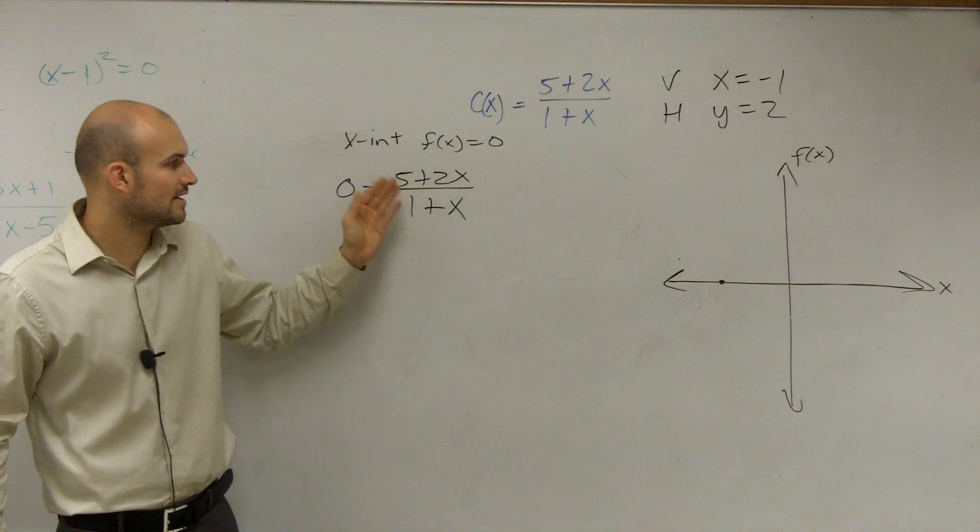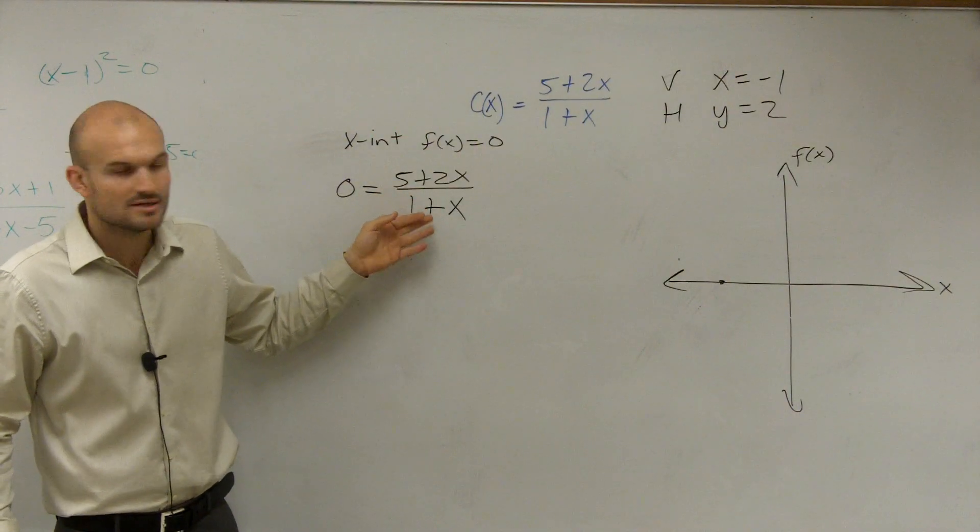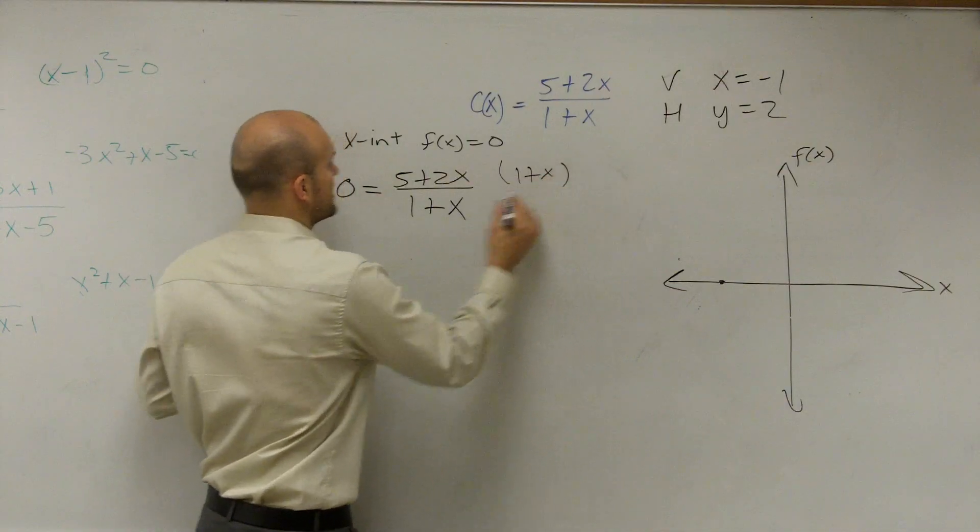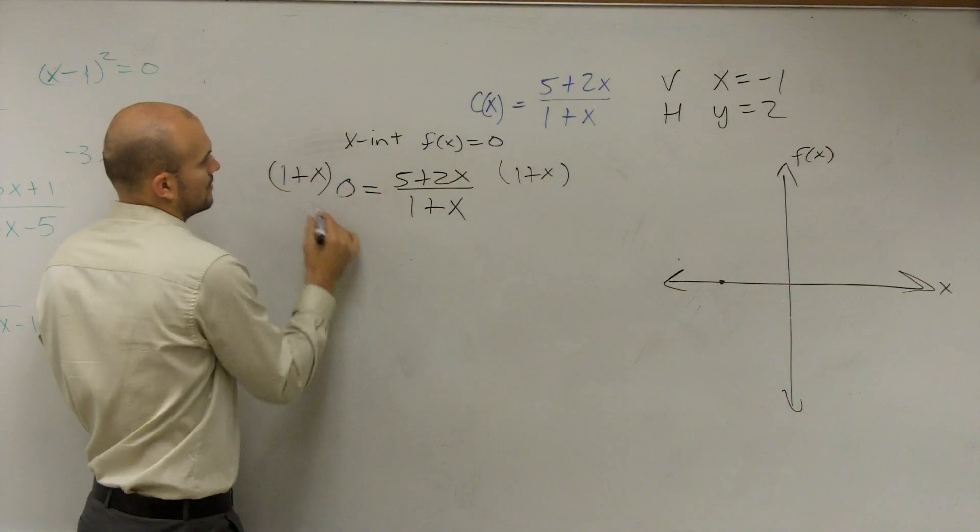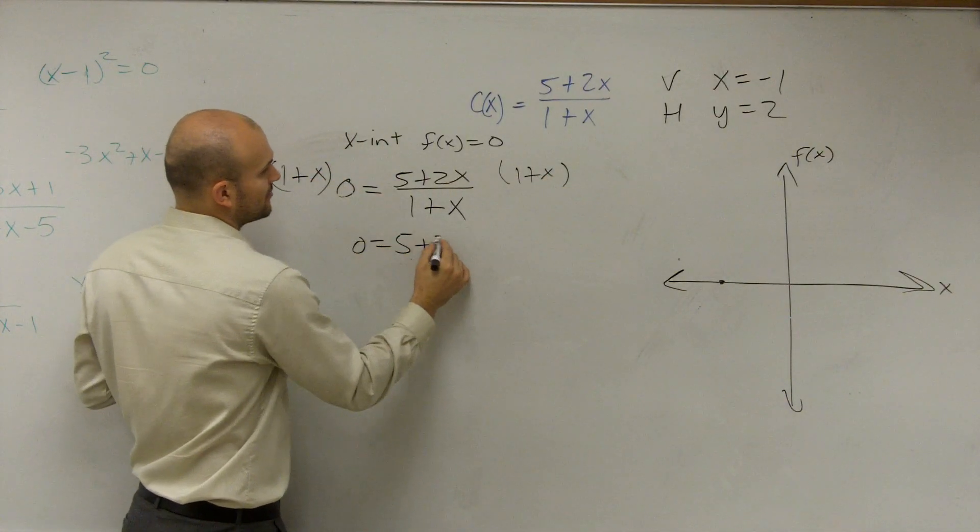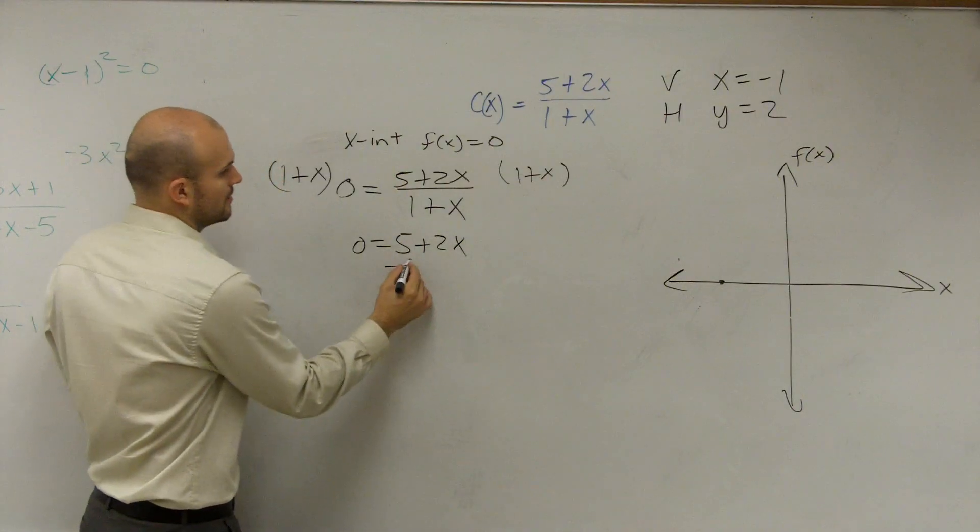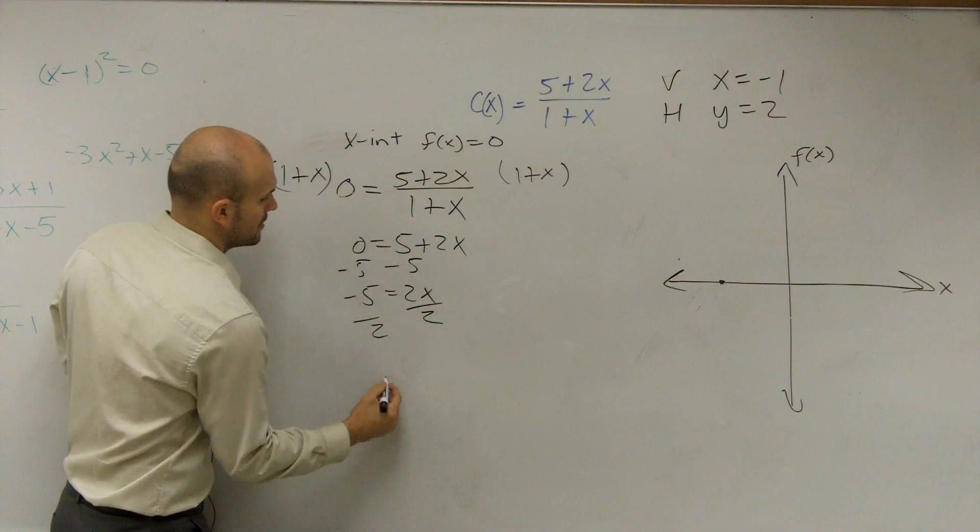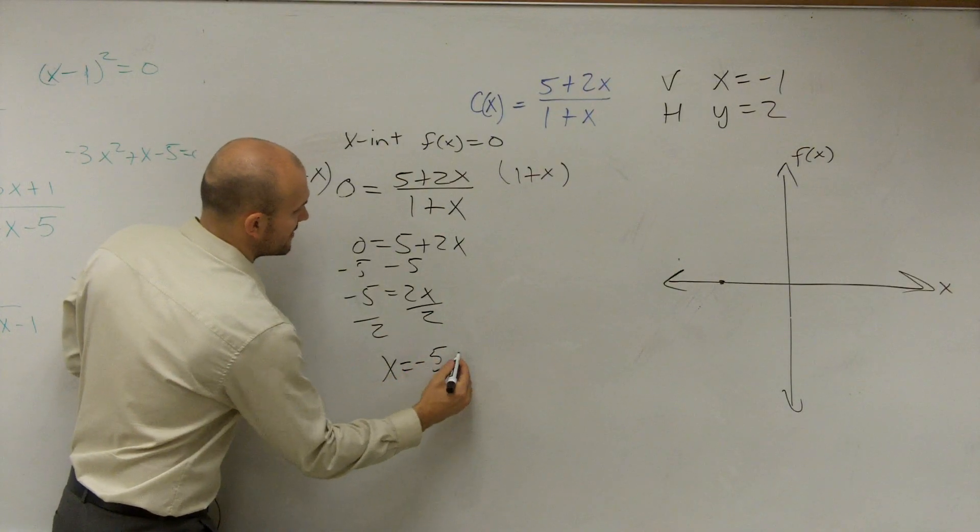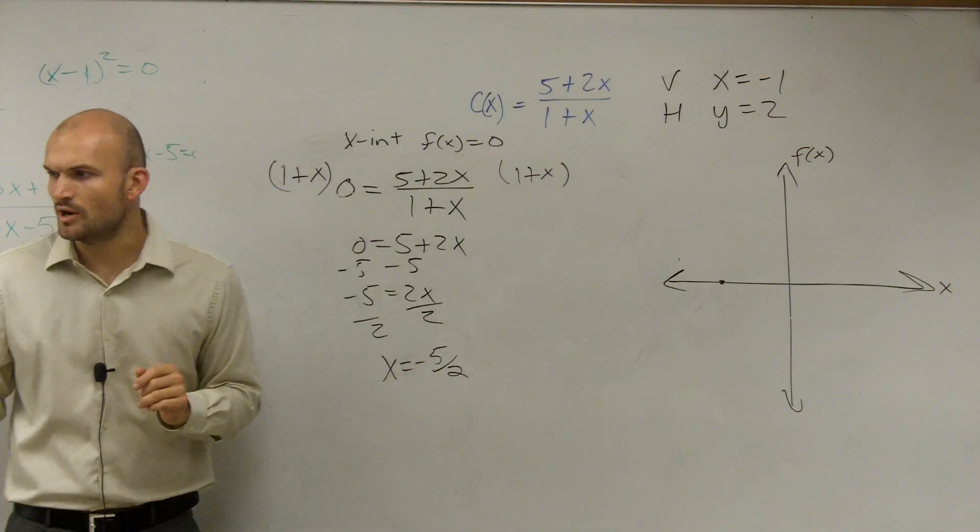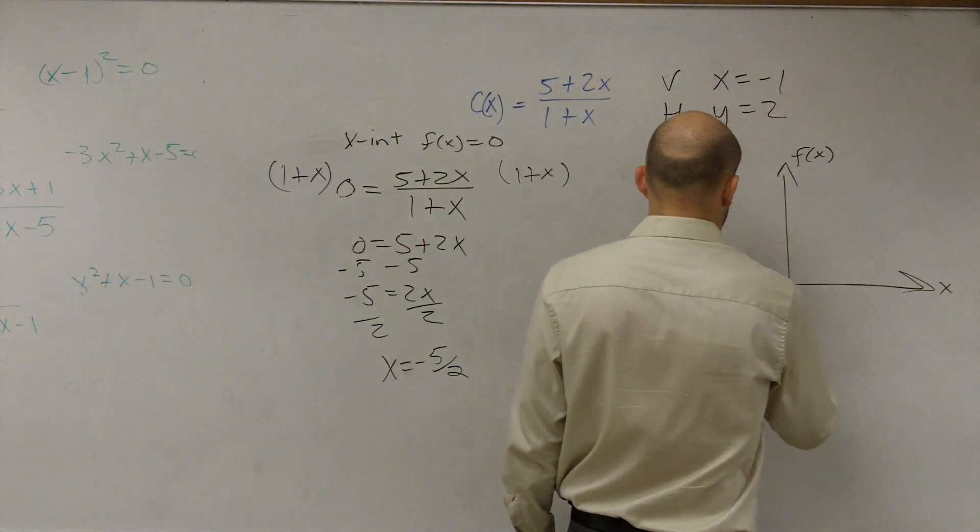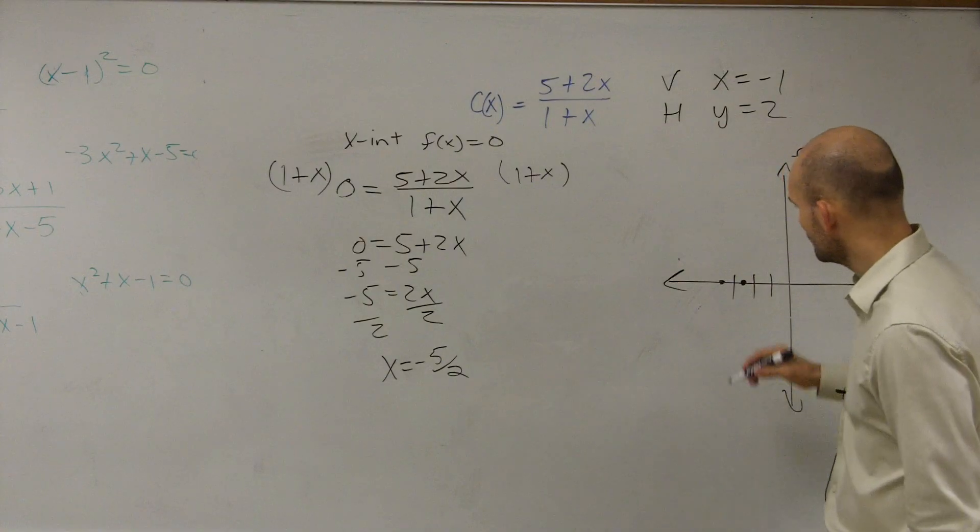Well, the first thing is always to get whatever's on your bottom off your bottom, right? So how do we get one plus x off the bottom? We can multiply it on both sides. So therefore, I'm left with zero equals five plus two x. Subtract five. Two x divided by two. So therefore, x equals negative five halves, which is about negative two point five.